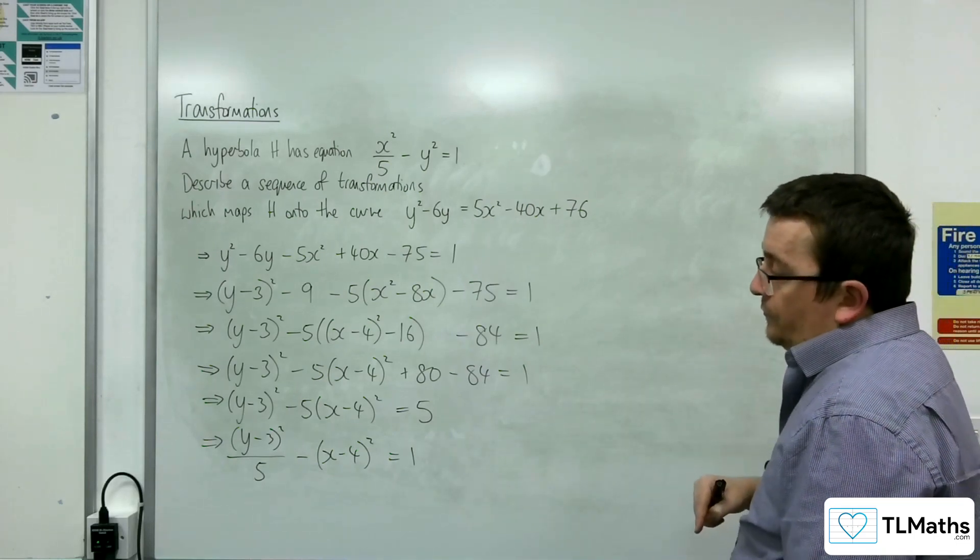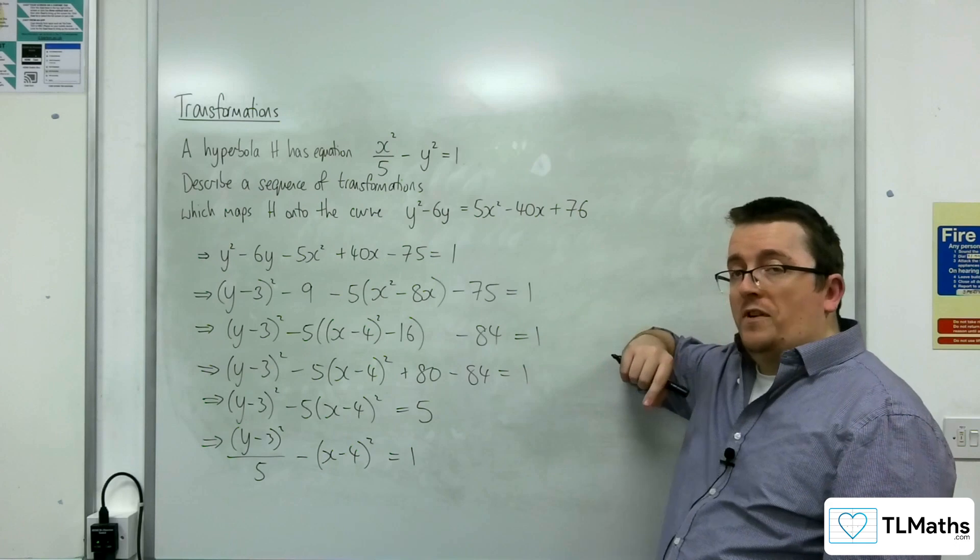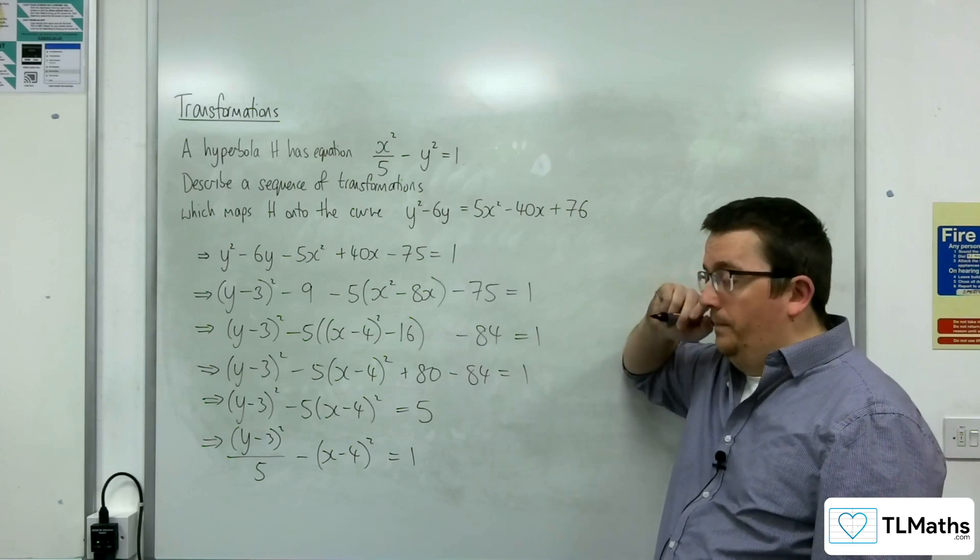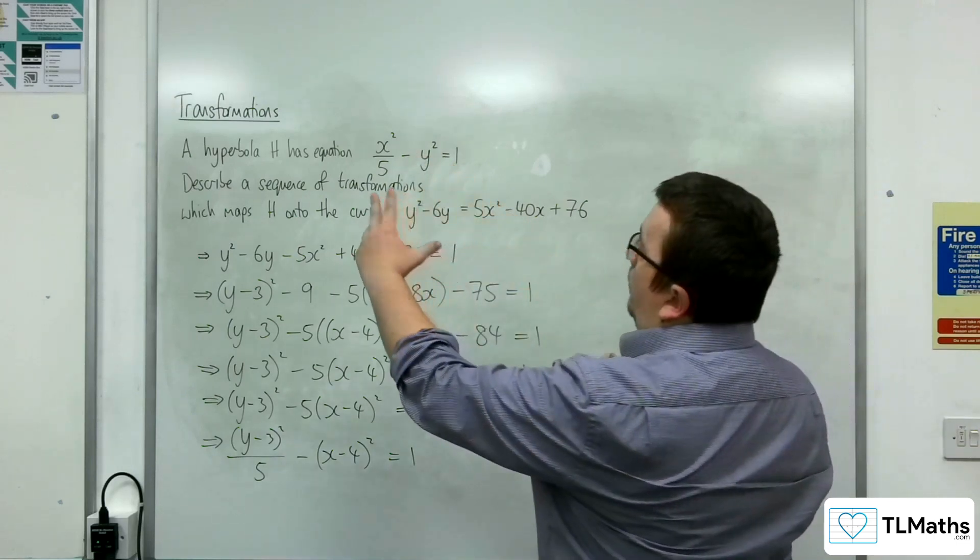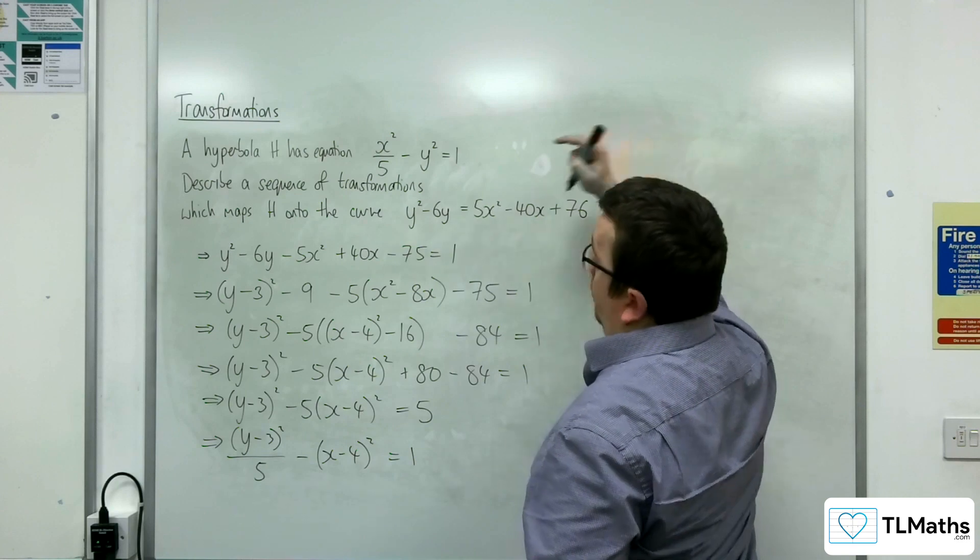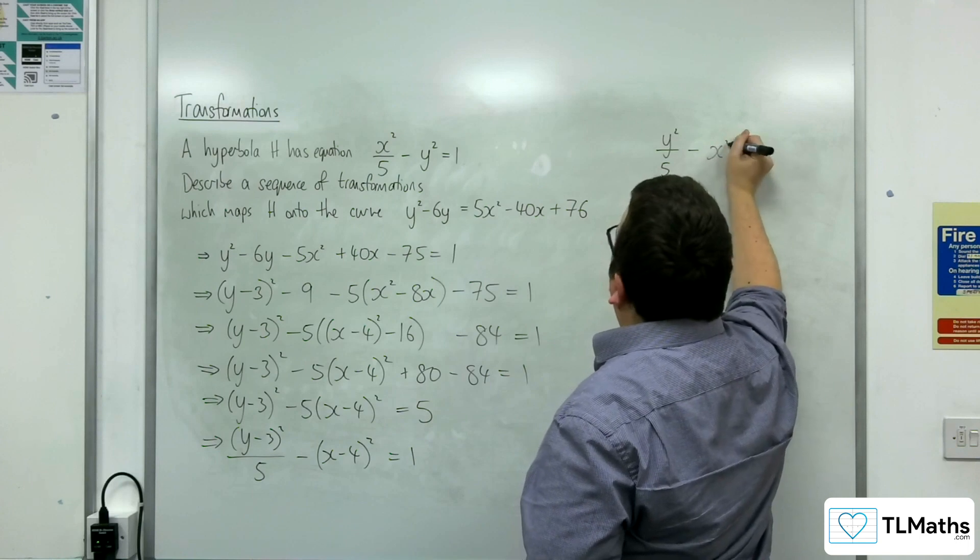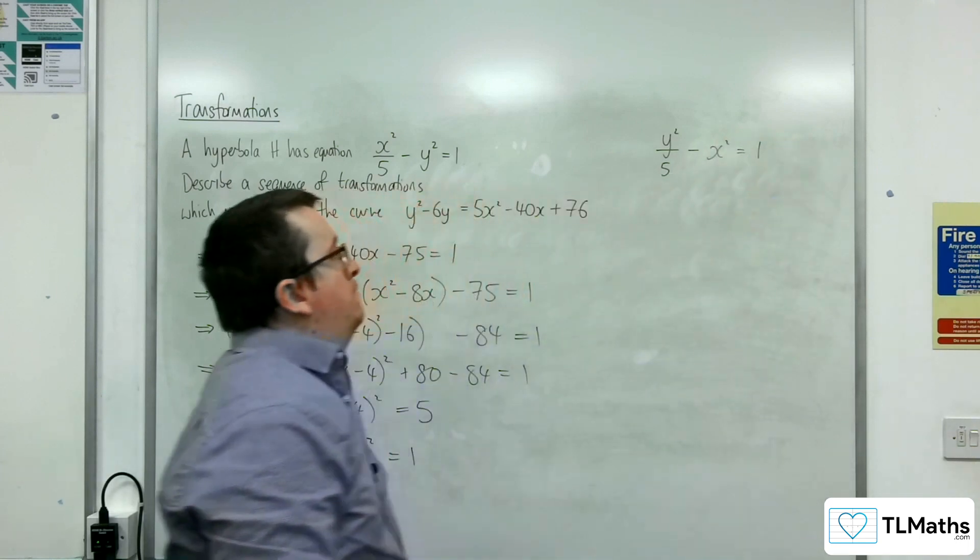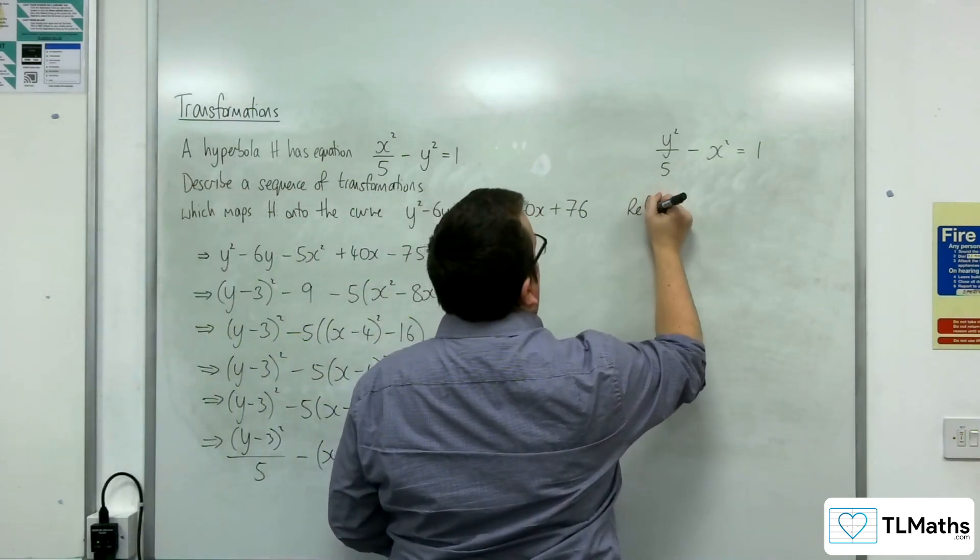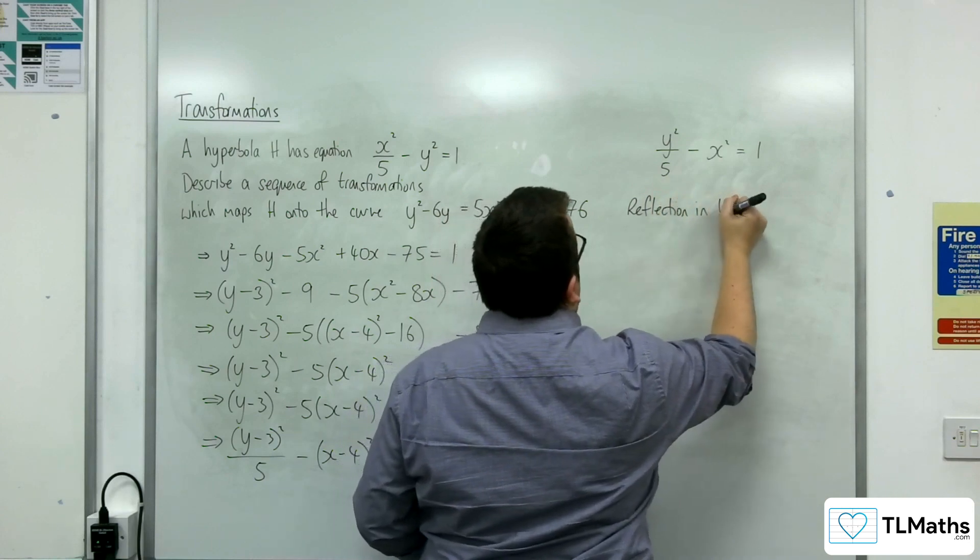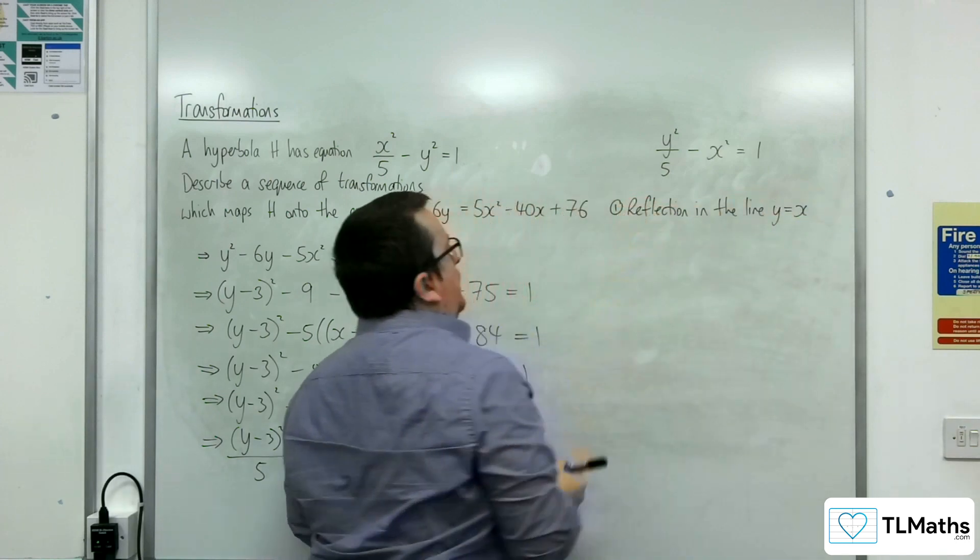Now which one of those came first? And did that translation actually occur first or not? So this is where we've got to be careful. So if we were to do it with this, if we were to start off by replacing the x and y, well, swapping the x's and y's, I'd get y squared over 5 take away x squared equals 1. So the first transformation we will do as the reflection in the line y equals x. So that's the first transformation.